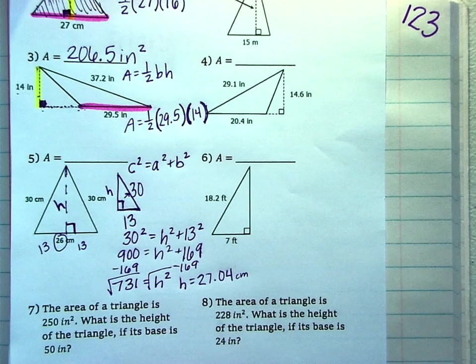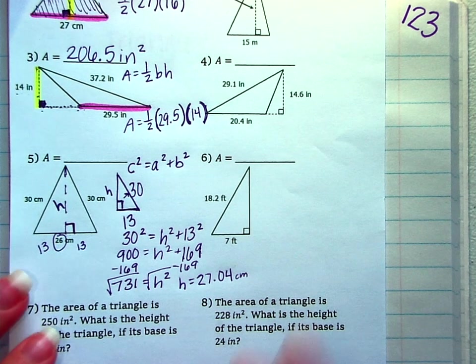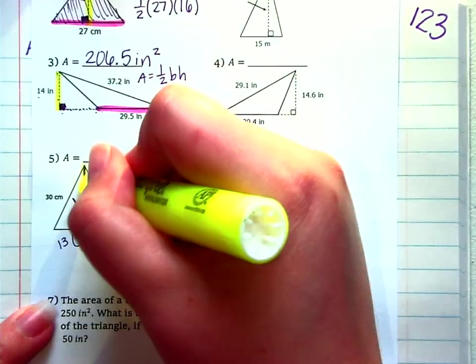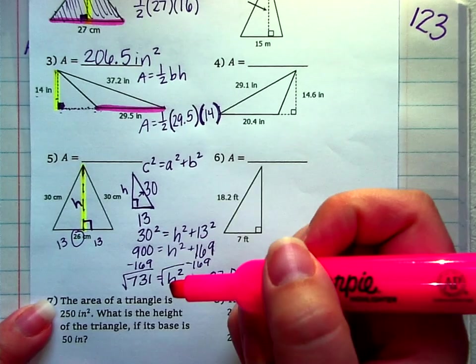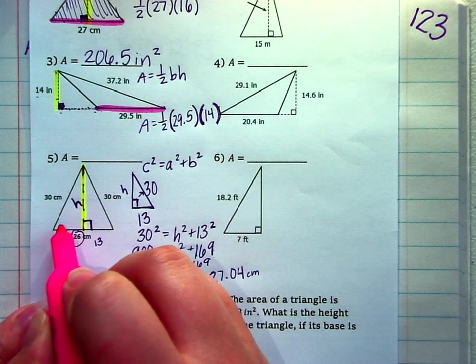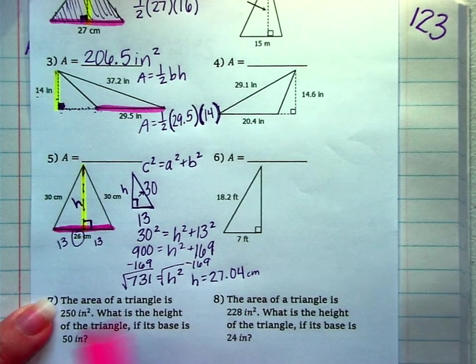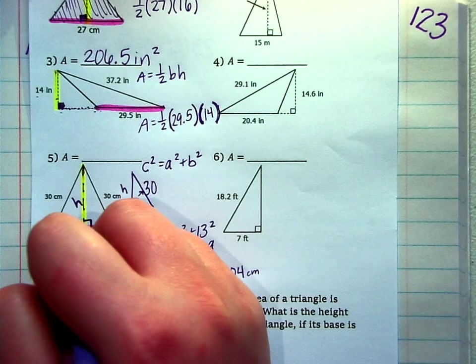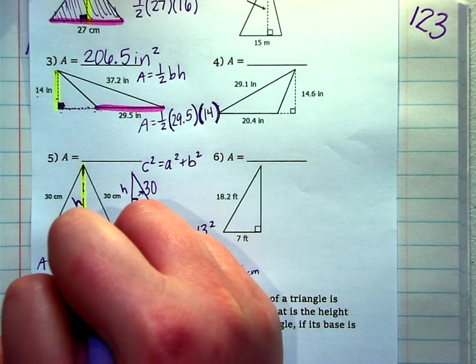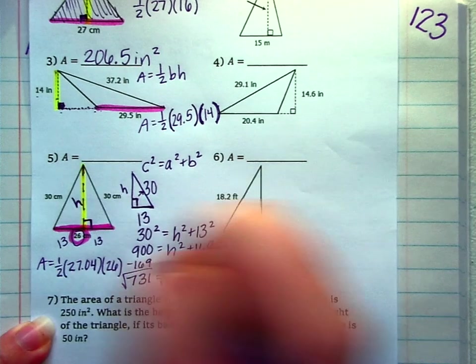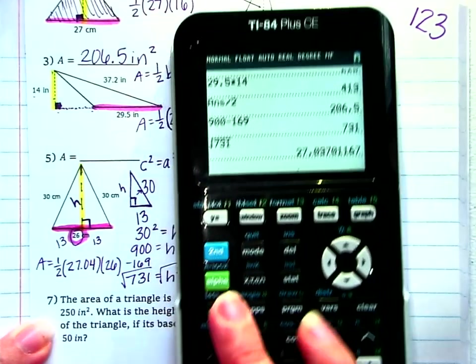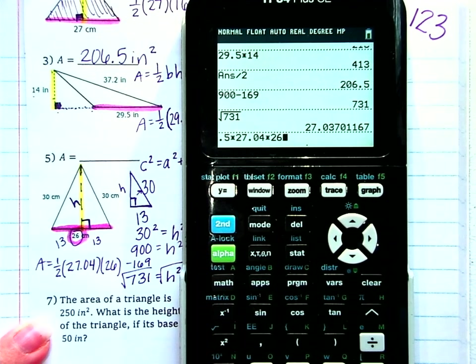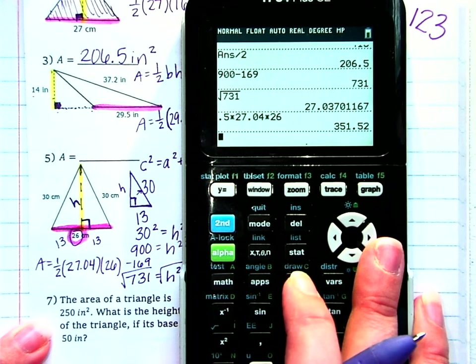All right, fun times. We just used Pythagorean theorem to find the height so now that we have the height let's find the area. So we just solved for the height we got 27.04 and going back to the original triangle the height is perpendicular to the base. The base is this entire side so we need to use 26 for the base. Area is going to equal one half of 27.04 times 26. And you could if you have a calculator like this just type that whole thing in 0.5 times 27.04 times 26. 351.52 centimeters squared.